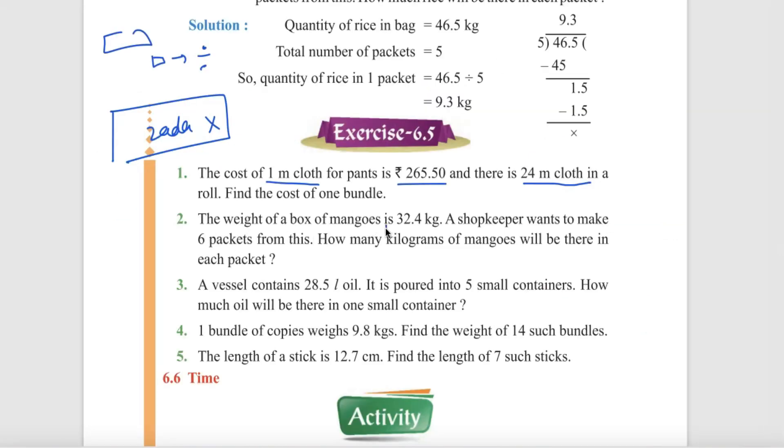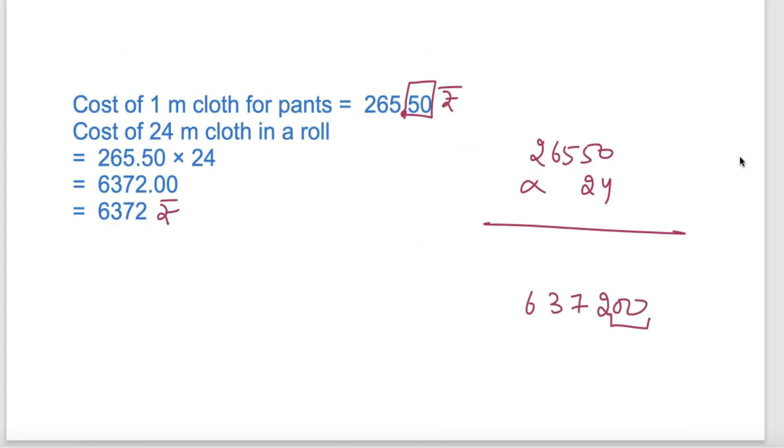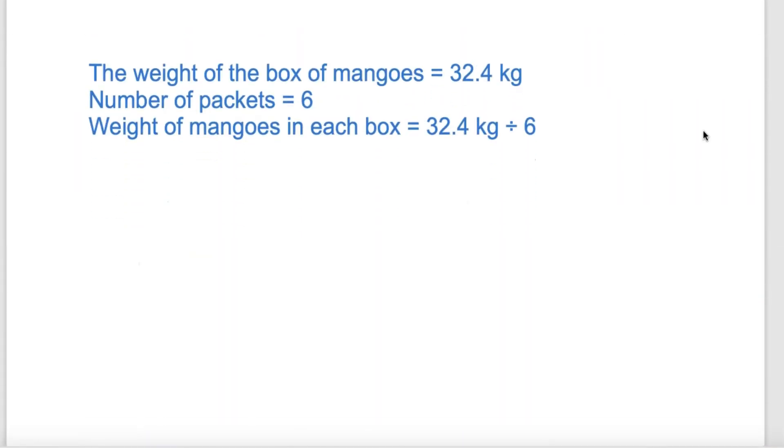The weight of a box of mangoes is 32.4 kg. The shopkeeper wants to make 6 packets out of it. How many kg of mangoes will be there in each packet? Now let's see how we solve this. First, I will write: weight of the box of mangoes is 32.4 kg. The number of packets we have made is 6.